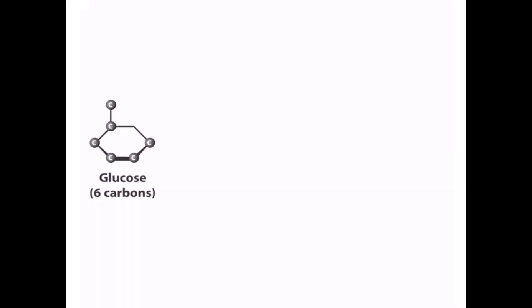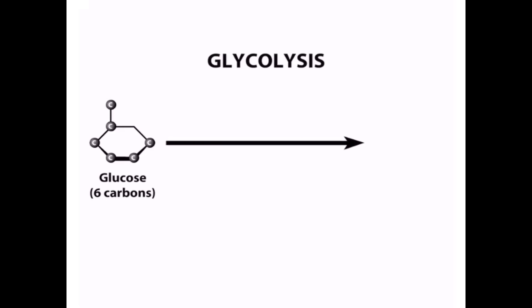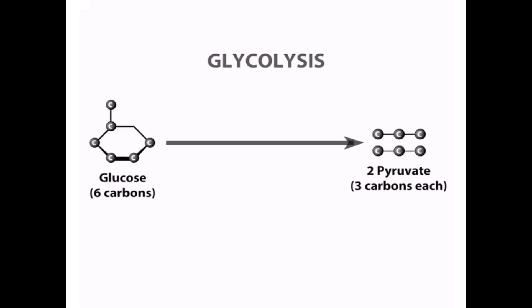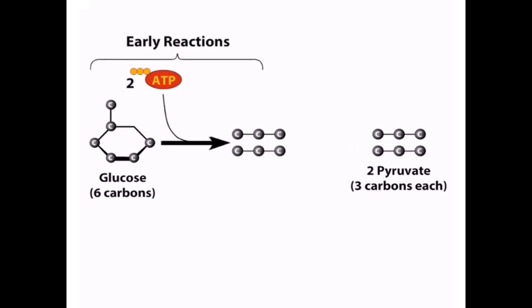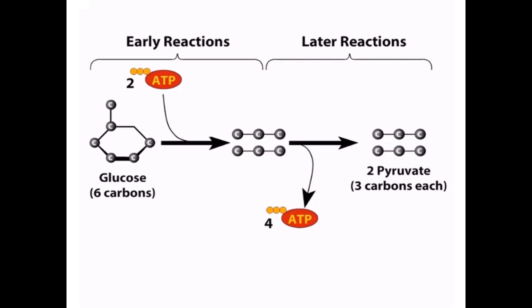To understand the process of glycolysis: in this pathway, the 6-carbon sugar glucose is metabolized to two molecules of the 3-carbon compound pyruvate. The earliest steps of glycolysis use two molecules of ATP. Four molecules of ATP are then produced in later reactions, for a net gain of two ATPs per glucose. Additionally, two molecules of NAD+ are reduced, resulting in two molecules of NADH.